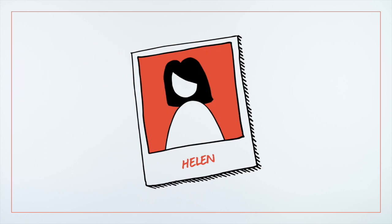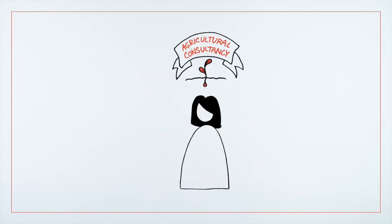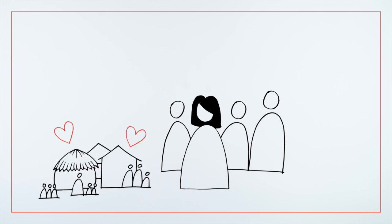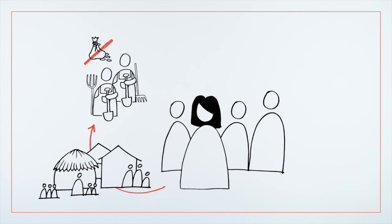Helen works for an agricultural consultancy. She and her team want to help a community where farmers have low income because they rely on unpredictable rice cultivation.